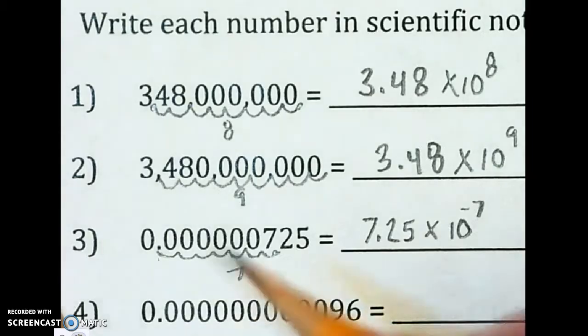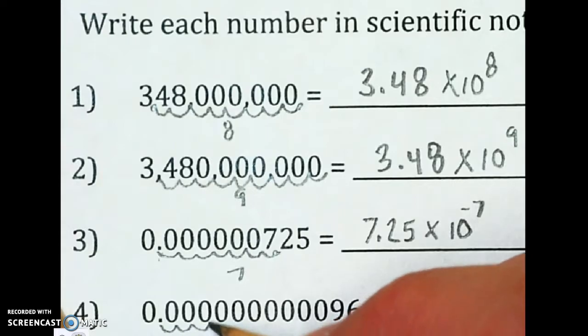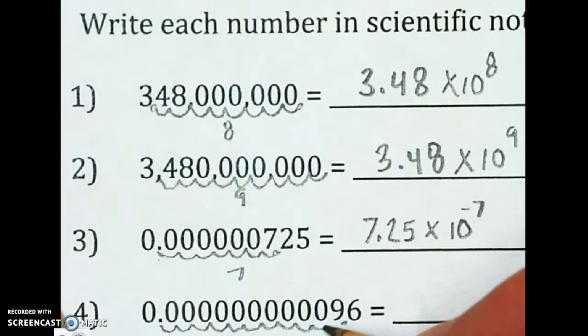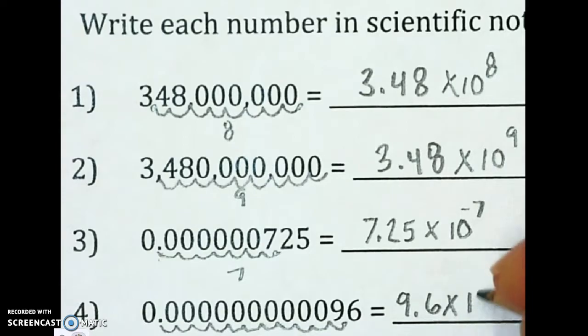And then on number four, I need to get it all the way behind the nine. So here we go. One, two, three, four, five, six, seven, eight, nine, ten, eleven. I'm going to write my eleven so I don't forget it. And that is 9.6 times 10 to the negative eleventh power. And we've got those numbers in scientific notation.